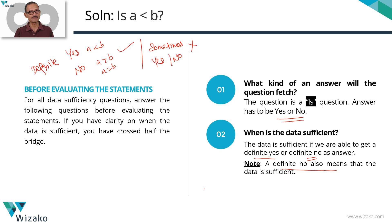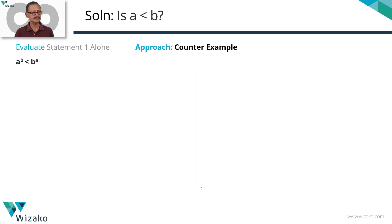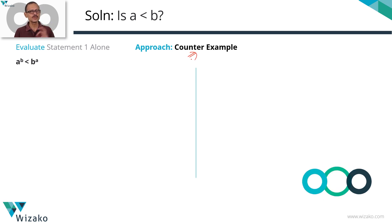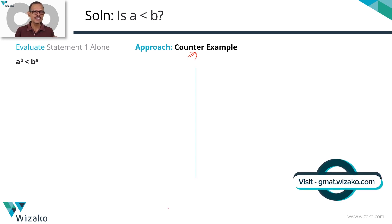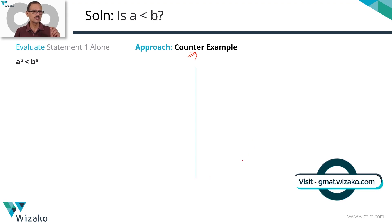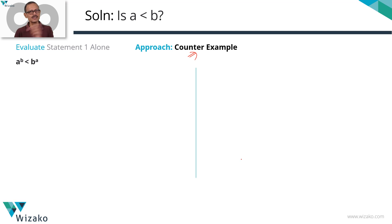We've got clarity on what kind of question this is, what kind of answer we need, and when the data is sufficient. Let's venture into the statements, starting with statement 1. The approach we're going to take is completely through counter examples. A good mnemonic for finding counter examples is FNZI — look for counter examples in fractions, negative numbers, zero, and integers.